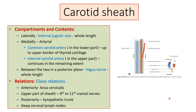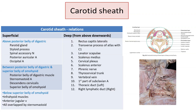This relation with the deep cervical lymph nodes has clinical importance. The superficial relations can be classified into those above the posterior belly of digastric muscle, those between the posterior belly of digastric and the superior belly of omohyoid, and those structures below the superior belly of omohyoid.